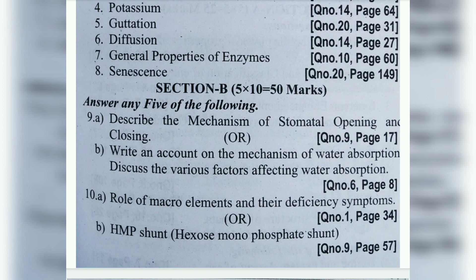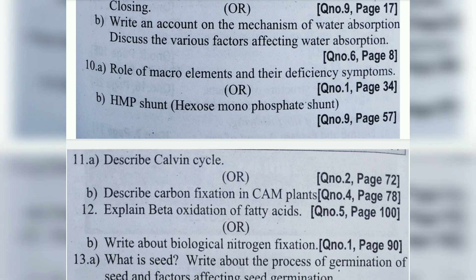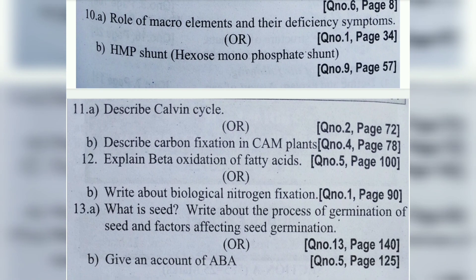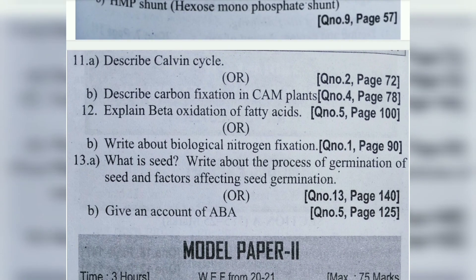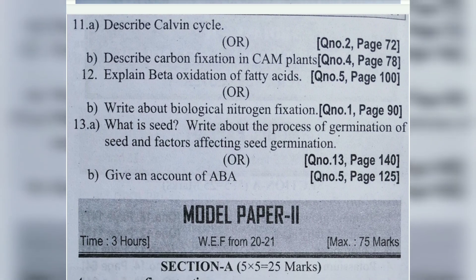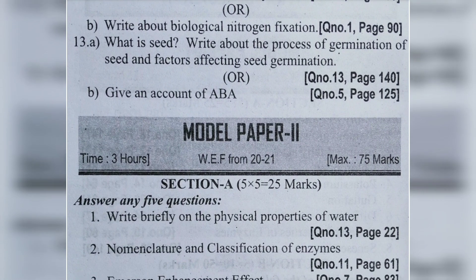For students of any university, each question will be explained with notes. Question 11a: describe carbon cycle. Question 11b: describe carbon fixation in CAM plants. Question 12a: explain beta oxidation of fatty acids. Question 12b: write about biological nitrogen fixation. Question 13a: what is seed - write about the process of germination of seed and factors affecting seed germination. Question 13b: give an account of ABA.